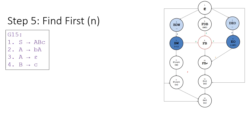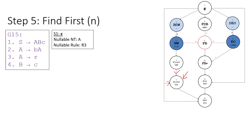Let's continue with the fifth step. In the fifth step, you will notice there are two arrows coming in: the first one is from step four and the second one is from step one. When you have an arrow coming in from step one, it means we need to consider the nullable non-terminal. The nullable non-terminal, as derived in step one, is A. So in deriving step five, we need to consider the nullable non-terminal A.